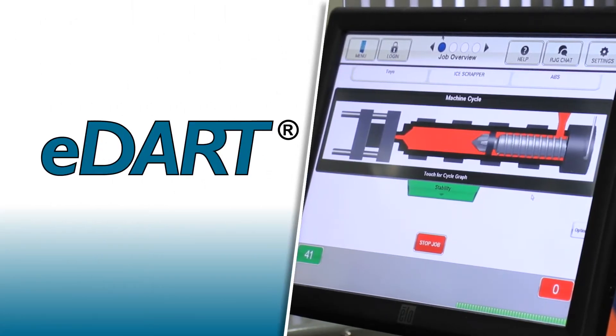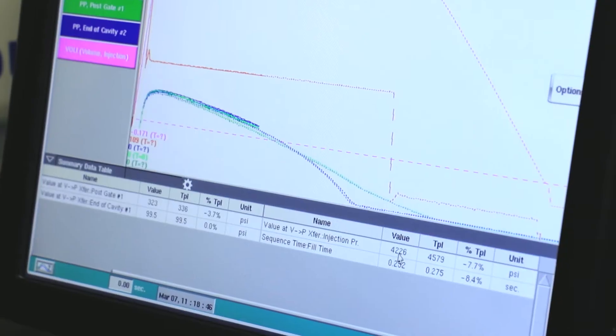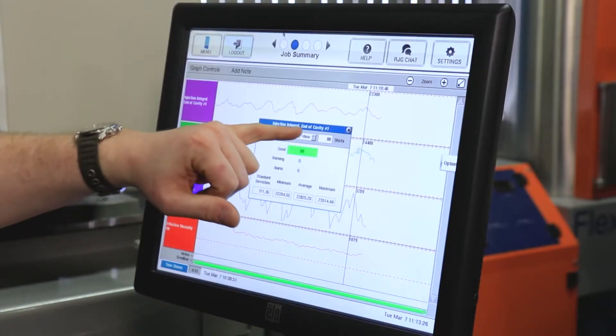RJG's eDART system enables molders to monitor, stabilize, and control their injection molding processes.